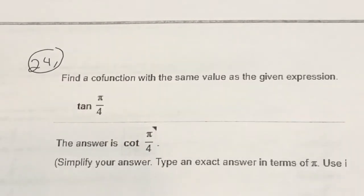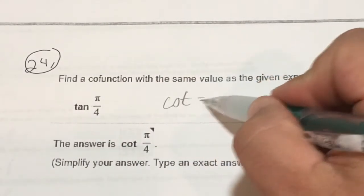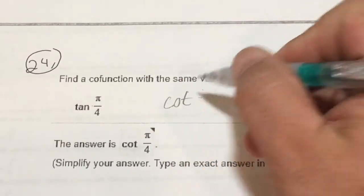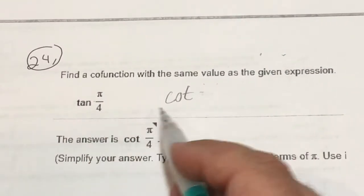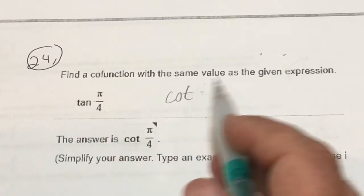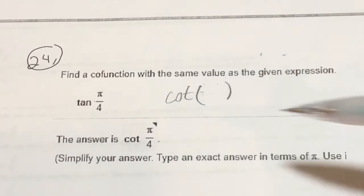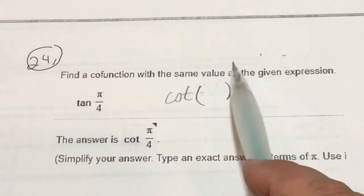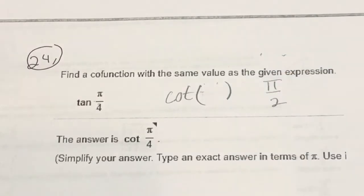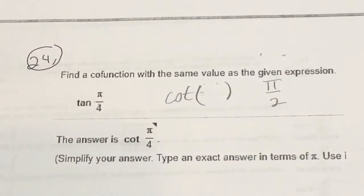Find a co-function with the same value as the given expression. Tangent of π/4 equals cotangent of what? This is actually hard to do in radians — it'll be easier in degrees because they have to add up to 90 degrees. In this case, they have to add up to π/2. So I'm looking for cotangent of something where that something plus π/4 adds up to equal π/2.